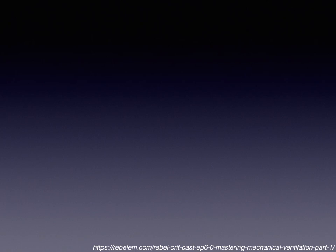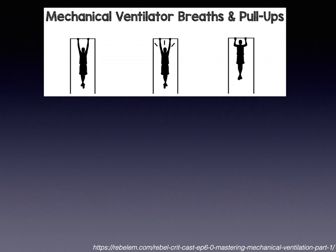A mechanical ventilator is a life support machine. The purpose is to help the patient get through the storm — to buy some time for the patient to recover from the disease process. For example, if you have a patient with pneumonia who cannot maintain enough oxygenation, you put the patient on mechanical ventilators to buy time for the patient to recover and for the antibiotic to work.